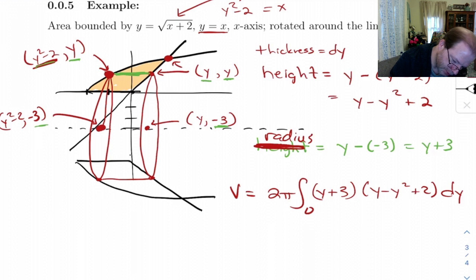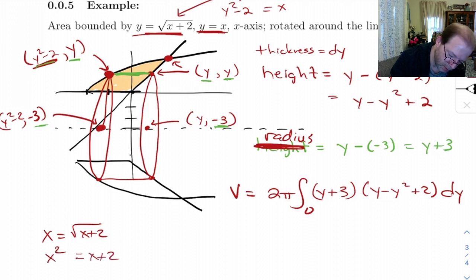Let's solve for it. Up here, where the two curves cross, I'm going to take these and set them equal to each other. You get x equals square root of x plus 2. Square both sides, you get x squared equals x plus 2. The x is 2.